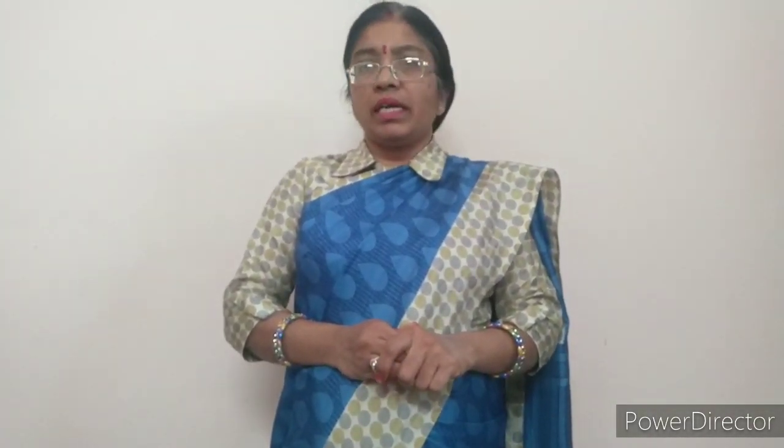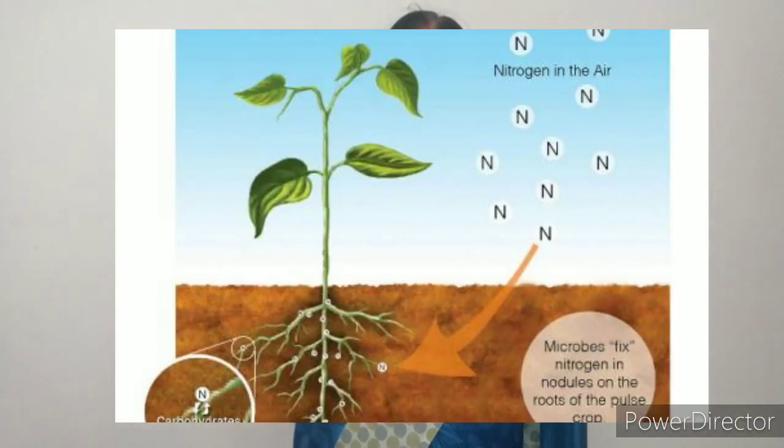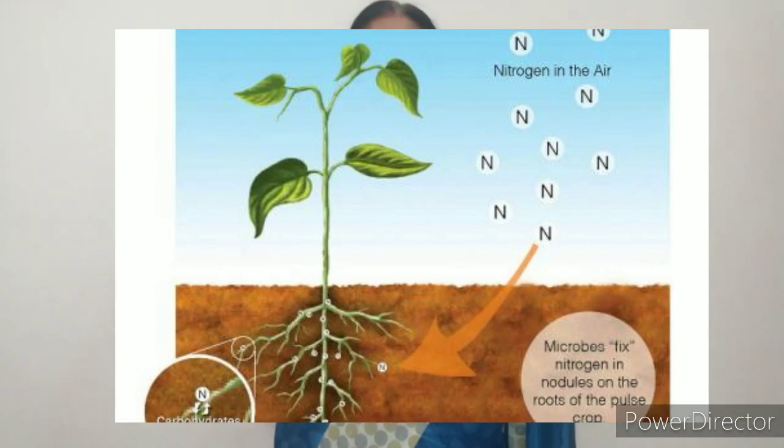Now the last topic of this chapter: replenishment of nutrients in the soil. If any crop is grown again and again in the soil, there will be deficiency of some specific nutrients. To fulfill this, we use different methods — for example, we can provide manure or compost at the time of farming, or we can use chemical fertilizers. Both bio and chemical fertilizers are used to fulfill the requirement of nutrients, and this is known as replenishment of nutrients in the soil. Another natural example is leguminous plants and Rhizobium bacteria, as already discussed. So this is all.